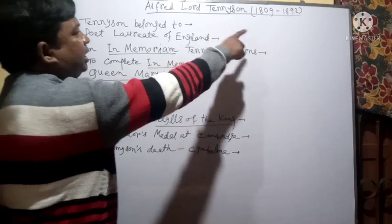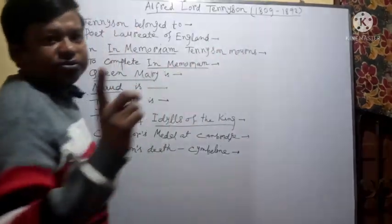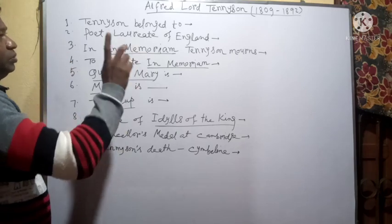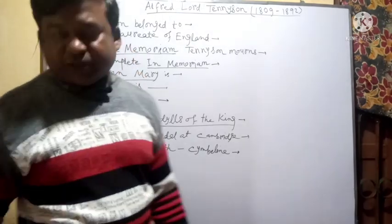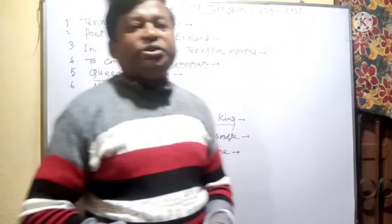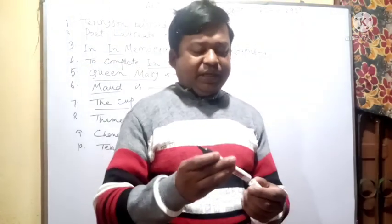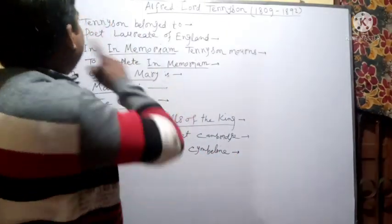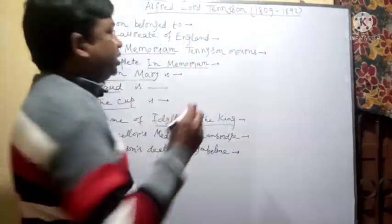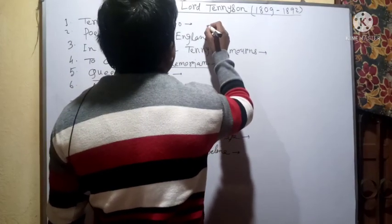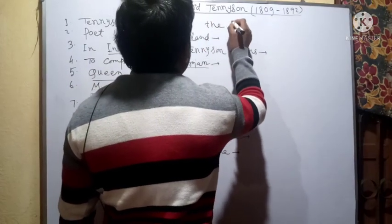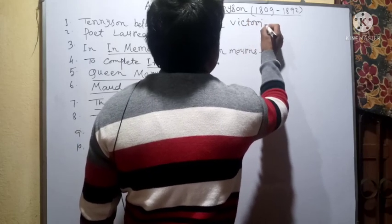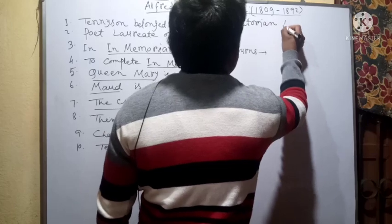Alfred Lord Tennyson, 1809 to 1892. Question number 1: To which historical age did Tennyson belong? The answer is: Tennyson belonged to the Victorian age.